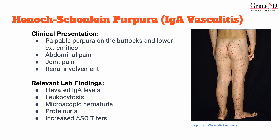The classic tetrad of symptoms in HSP includes palpable purpura, arthritis or arthralgia, abdominal pain, and renal disease. However, in any individual patient, only some of these symptoms may be present. The skin manifestations are present in typically 100% of cases, including symmetrically distributed, raised, erythematous macules or urticarial lesions that coalesce into palpable purpura. The most common sites of skin involvement are the lower extremities, the buttocks, and other areas of pressure or constraint, such as the waistline. Joint involvement is present in approximately 75% of cases, typically arthritis or arthralgia of the ankles and knees.